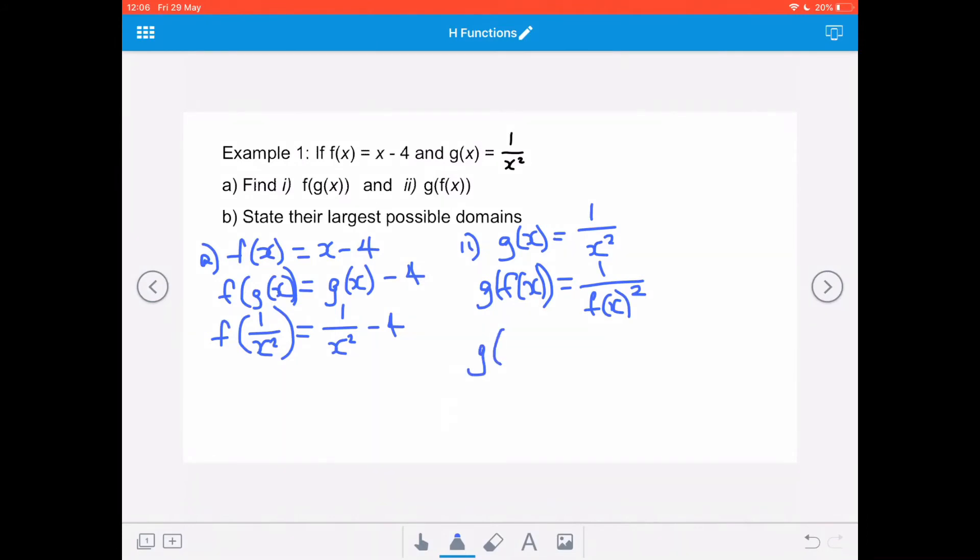So if I replace that f of x with the value of f of x, which is x minus 4, then I'm going to have 1 over x minus 4 all squared.